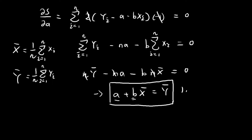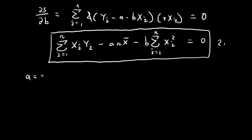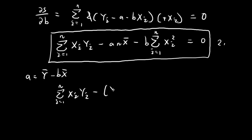To solve the system, we can see from the first condition that A equals the sample mean of y minus B times the sample mean of x. We then substitute this expression for A into the second equation: sum of xi times yi, minus (sample mean of y minus B times sample mean of x) times n times sample mean of x, minus the remaining terms.